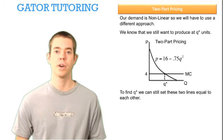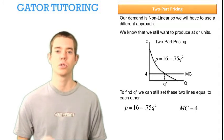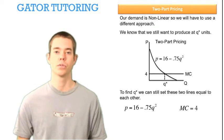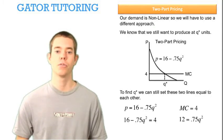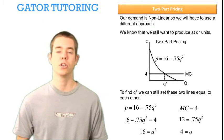So we can find q star by setting these two lines equal to each other. One line is inverse demand, p equals 16 minus .75 q squared, and one line is marginal cost, which is equal to p equals 4, or mc equals 4. So we can plug in 4 for price, and solve where these two lines intersect. Subtracting 4 from each side, and adding .75 q squared to each side, and now dividing through by .75, taking the square root, we see that q equals 4.